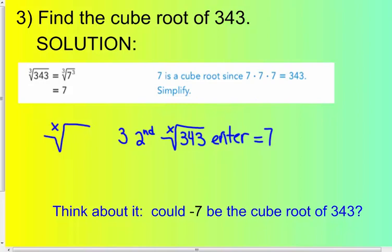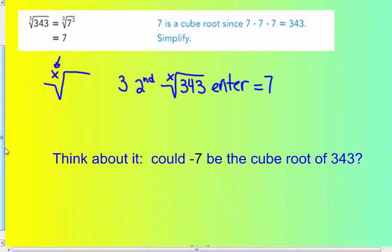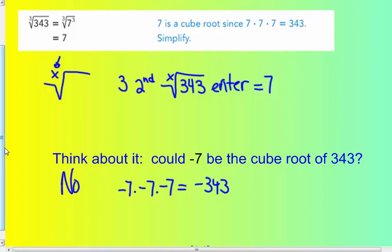If you have your calculator handy, try it yourself. You can also take fourth, fifth, and sixth roots — you just put the root number in first. So, could negative 7 be the cube root of negative 343? If you do negative 7 times negative 7 times negative 7, you get negative 343, not 343. So with an odd number of negatives you get a negative answer — negative 7 is not the cube root of 343.